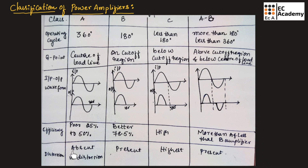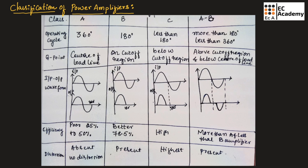If we consider class B power amplifier, the efficiency is better, at 78.5%. The efficiency of class C power amplifier is very high compared to class A and class B, at more than 90%. In class AB power amplifier, the efficiency is more than class A and less than class B. Considering distortion: class A power amplifier has no distortion; in class B distortion is present; in class C distortion is very high; and in class AB distortion is present. If you get more output waveform, efficiency is poor but there will be less distortion; if you get less output waveform, efficiency will be high but distortion will be more. This is the classification of power amplifiers — hope you have understood the topic, thank you.